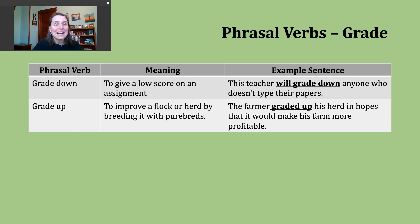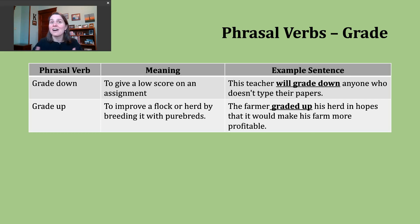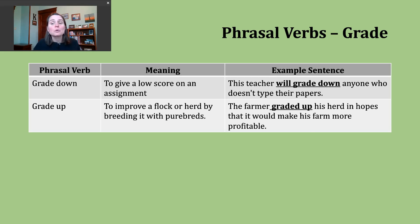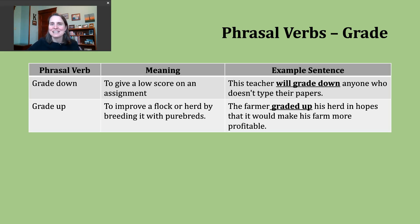Another phrasal verb you might encounter is to grade up. If you're not working on a farm, this definition might not mean a lot to you, but it can mean to improve a flock — maybe chickens or other poultry — or a herd, by breeding it with higher quality or more purebred animals. An example: 'The farmer graded up his herd in hopes that it would make his farm more profitable.' Having this higher quality animal might lead to larger sales and more money.